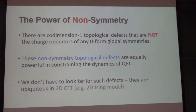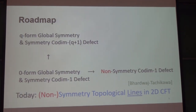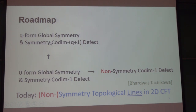As it turns out, these non-symmetry topological defects are equally powerful in constraining the dynamics of quantum field theory as their symmetry cousins. And we don't have to look far for such defects. You might think these non-symmetry defects are totally exotic and only appear in some very weird quantum field theory, but in fact they are ubiquitous at least in two-dimensional CFT. For example, there's already one such non-symmetry topological defect in the two-dimensional Ising CFT.